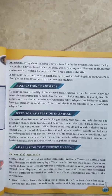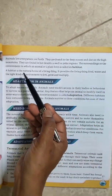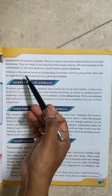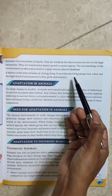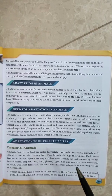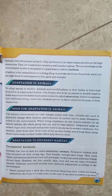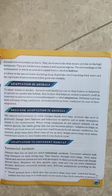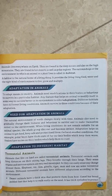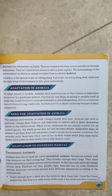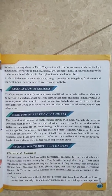First, what is Habitat? The surroundings or the environment in which an animal or a plant lives is called its habitat. A habitat is a natural home of a living thing. It provides the living thing food, water and the right kind of environment to live, grow and multiply.